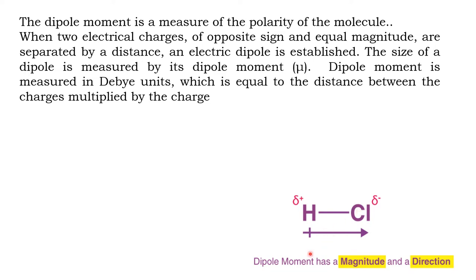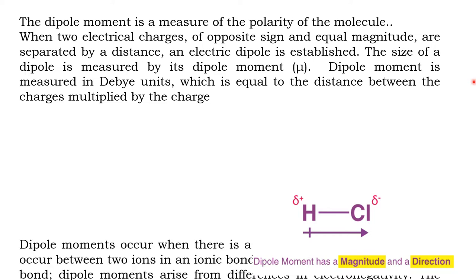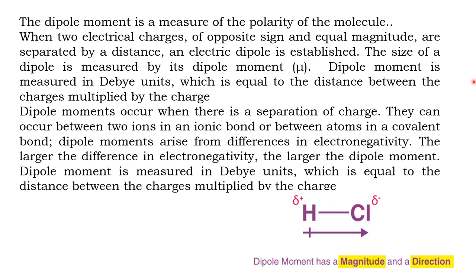Dipole moment has both magnitude and direction. The extent of dipole moment is measured by the unit called Debye. Debye is the unit of dipole moment. Greater the electronegativity difference between the atoms, greater the dipole moment.